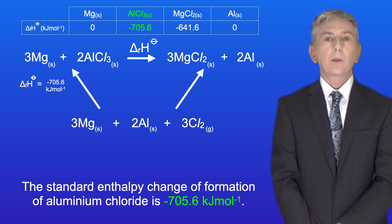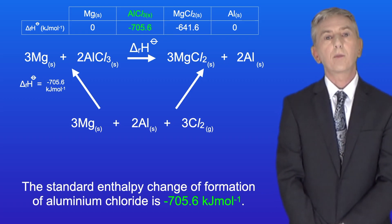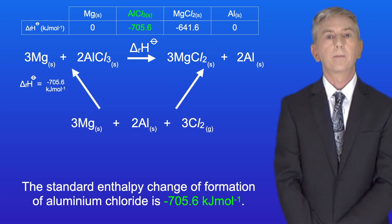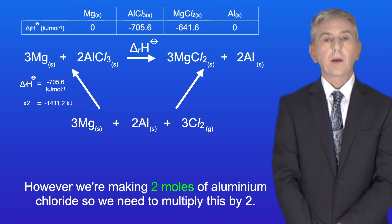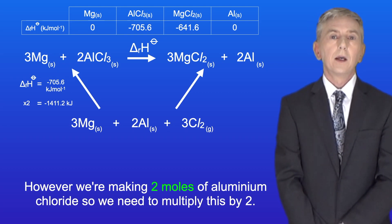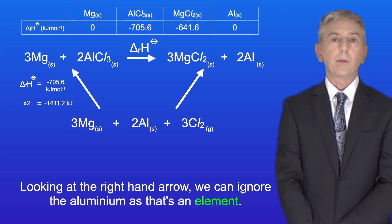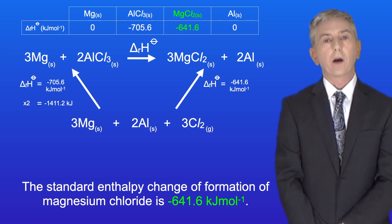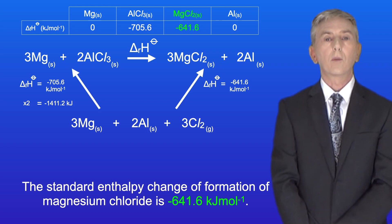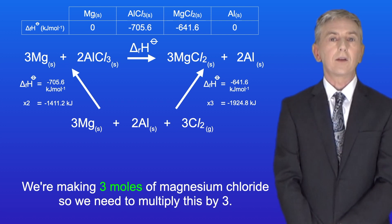The standard enthalpy change of formation of aluminium chloride is minus 705.6 kJ per mole. However, we're making two moles of aluminium chloride, so we need to multiply this by two. The standard enthalpy change of formation of magnesium chloride is minus 641.6 kJ per mole. We're making three moles of magnesium chloride, so we need to multiply this by three.